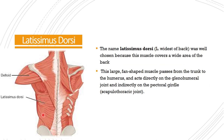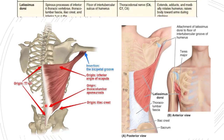The second muscle is latissimus dorsi. The name comes from Latin: 'latissimus' means widest and 'dorsi' means back — aptly named because this large fan-shaped muscle covers a wide area of the back, passing from the trunk to the humerus and acting directly on the shoulder joint and indirectly on the pectoral girdle.